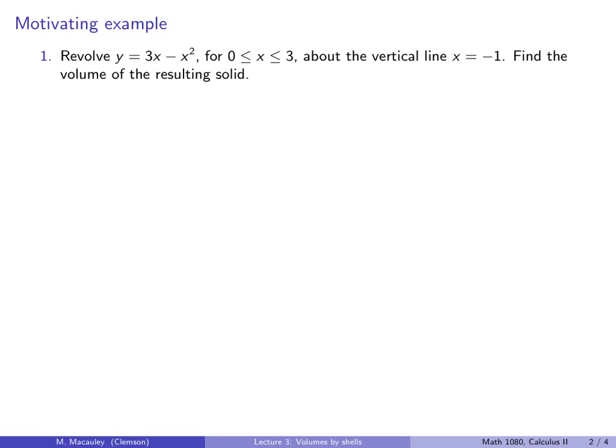Let's consider the following curve. This is an upside-down parabola, and between 0 and 3 it looks like this. Suppose we want to revolve this about the vertical line x equals negative 1. So this is a solid of revolution problem, and suppose we want to find the volume of the resulting solid.